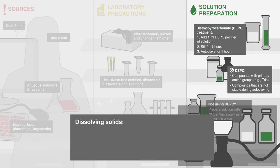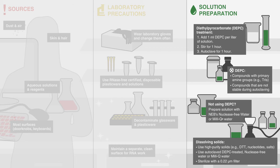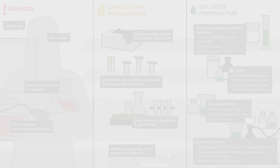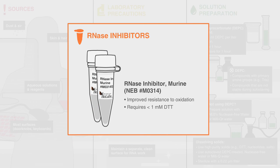Solutions and buffers — for example, DTT, nucleotides, salts — should be prepared by dissolving the solid and autoclaving in DEPC-treated, nuclease-free, or Millicube water, then passing through a 0.22 micron filter to sterilize. RNase activity can also be avoided by using RNase inhibitors, such as murine RNase inhibitor, which requires a low concentration of DTT — less than one millimolar — to maintain activity, making it ideal for reactions where low DTT concentration is required, like real-time RT-PCR.